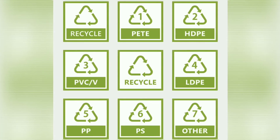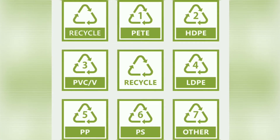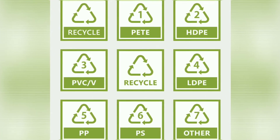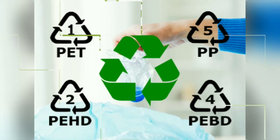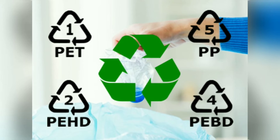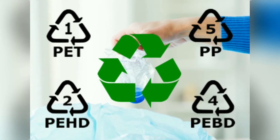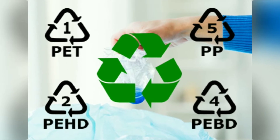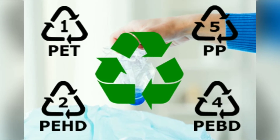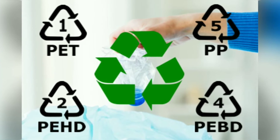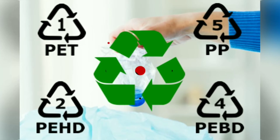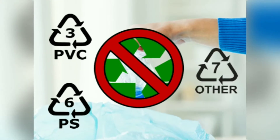Plastic is categorized into types 1 through 7. In the US, we recycle types 1, 2, 4, and 5. We do not recycle types 3, 6, and 7.